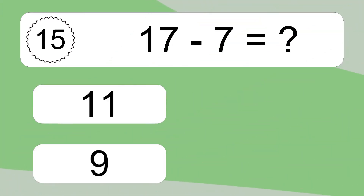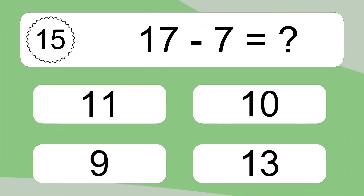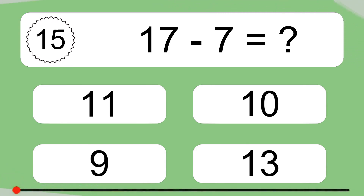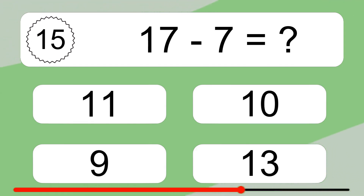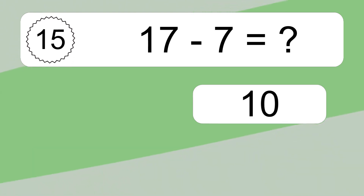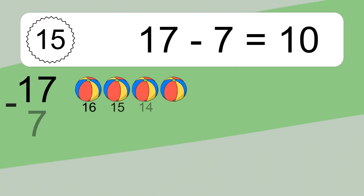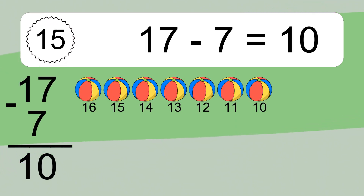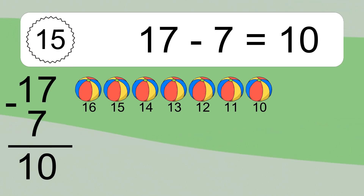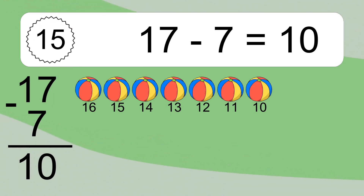17 minus 7 equals what? 17 minus 7 equals 10. Let's count it: 16, 15, 14, 13, 12, 11, 10.